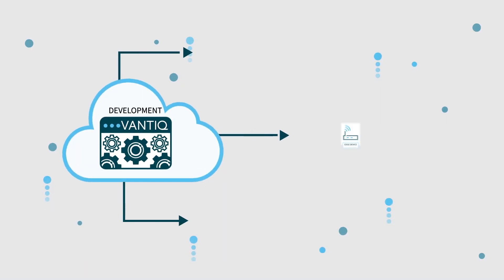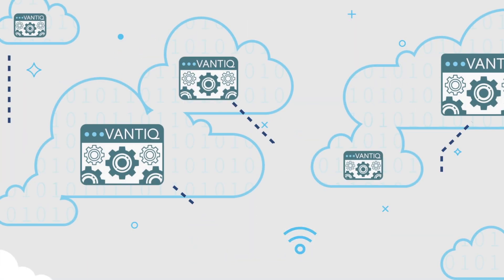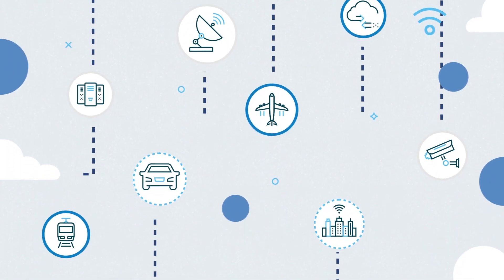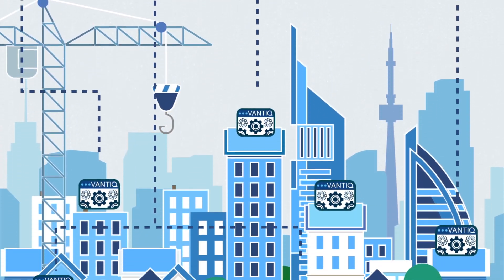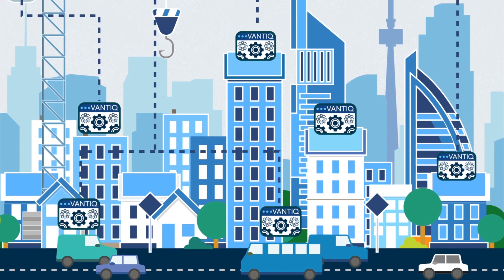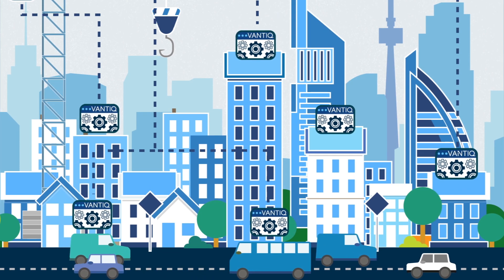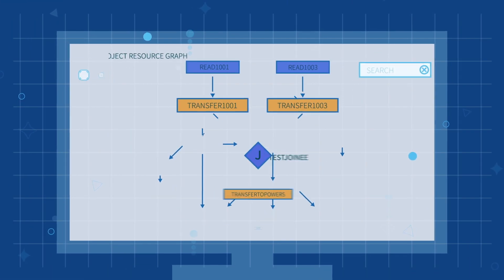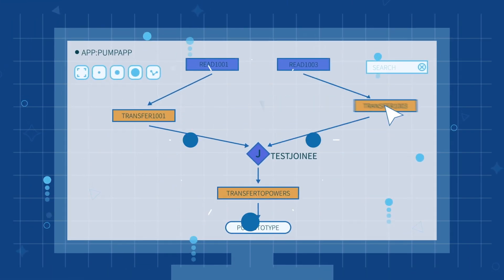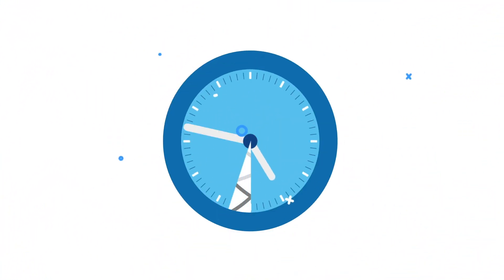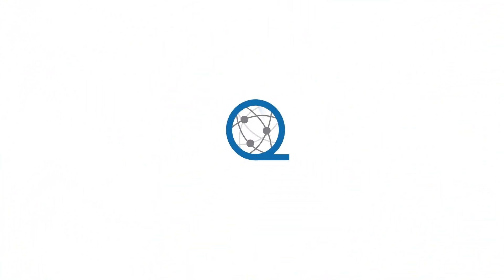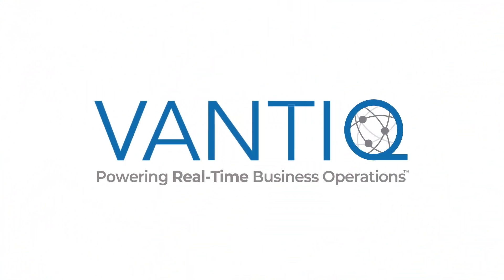Bantic can be distributed in any environment so that no matter where your data is coming from, you are able to manage your business and take action in real time. Finally, Bantic's low-code approach means that you build powerful applications faster than you ever thought possible, so that you can truly transform the way your business operates.